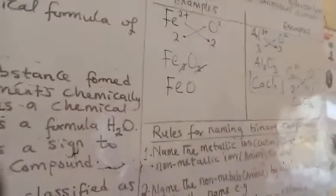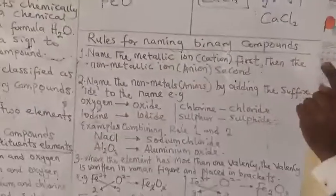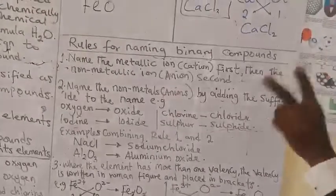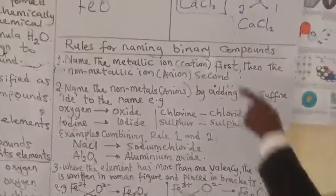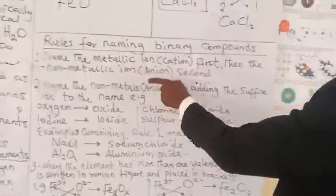What are the rules for naming binary compound? Let's look at the rules. We have seen the chemical formula. How do we name it? Number 1, the first thing you do, why naming chemical compound is, you name the metallic ion, the cation first. Remember, binary compounds are made up of 2 ions. You name the cation, the metallic ion first. Then, the non-metallic ion comes second.